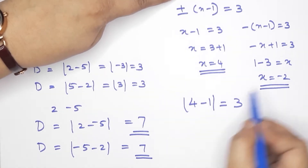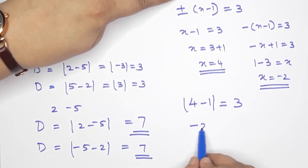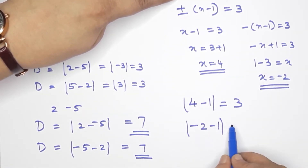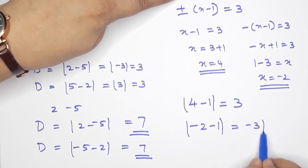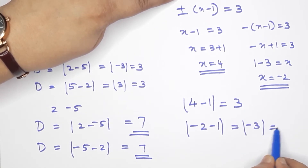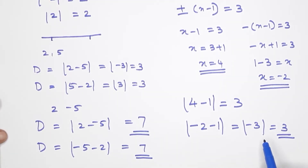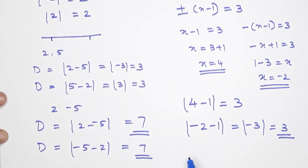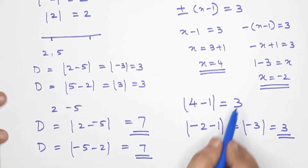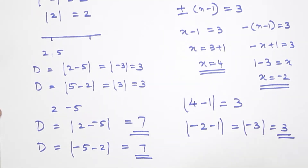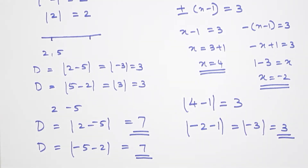And for x equals negative 2: modulus of negative 2 minus 1 equals modulus of negative 3 equals 3. So both values satisfy the equation. Modulus is absolute value — it's the correct value. A negative sign or positive sign alone is not absolute value. The absolute value is always positive. Now it is clear.